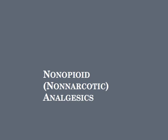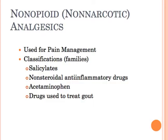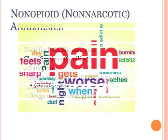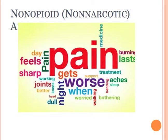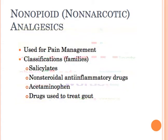In this video we're going to talk about non-opioid, otherwise known as non-narcotic analgesics. These drugs are used to treat pain, and there's a couple of different families. We'll talk about salicylates, non-steroidal anti-inflammatory drugs, acetaminophen, and at the end we'll talk about drugs used to treat gout.